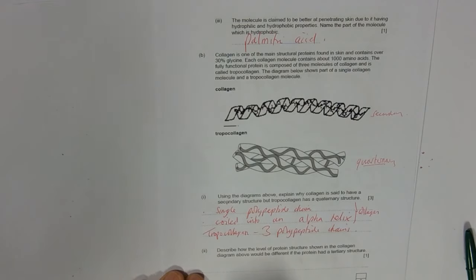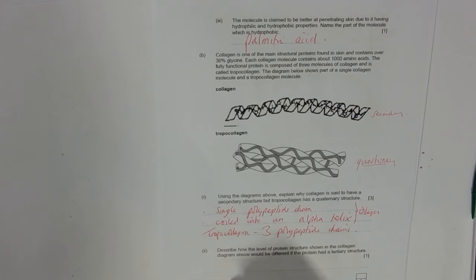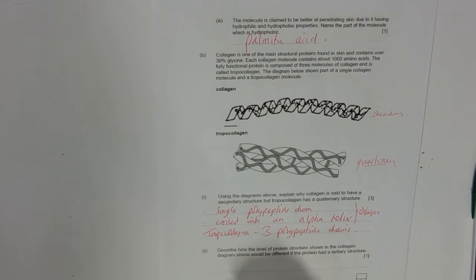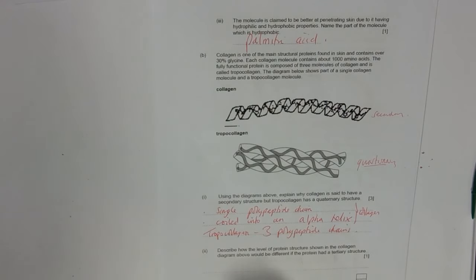Describe how the level of protein structure in the collagen diagram would be different if it had a tertiary structure. Well, tertiary structure is where you get bending and folding of the chain into a 3D structure. So it's just really giving us that definition - folding of the chain.